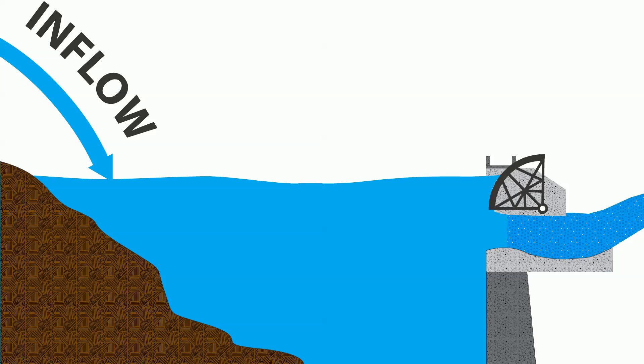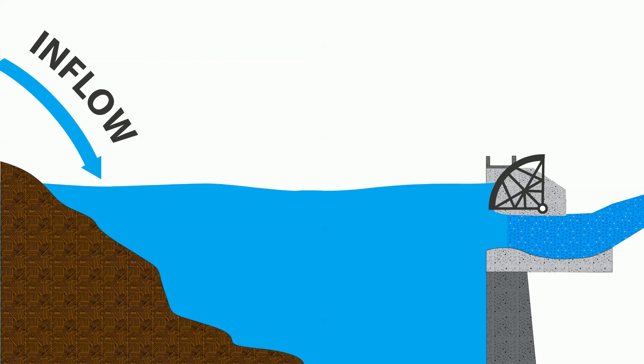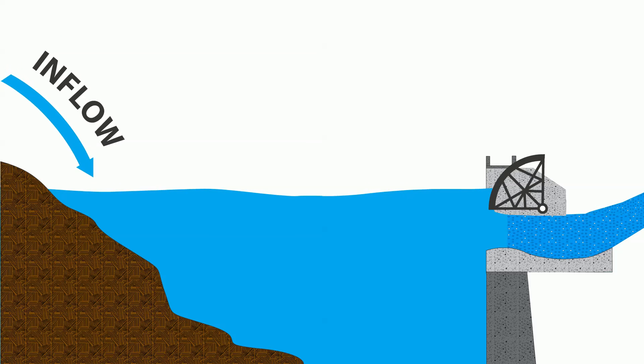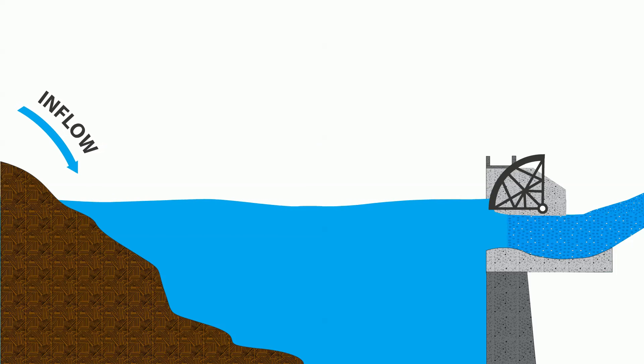After the peak inflow, as the inflow into the lake decreases, the flow through the spillway exceeds the inflow. The reservoir elevation decreases since more water is flowing out through the spillway than the amount of water flowing in.